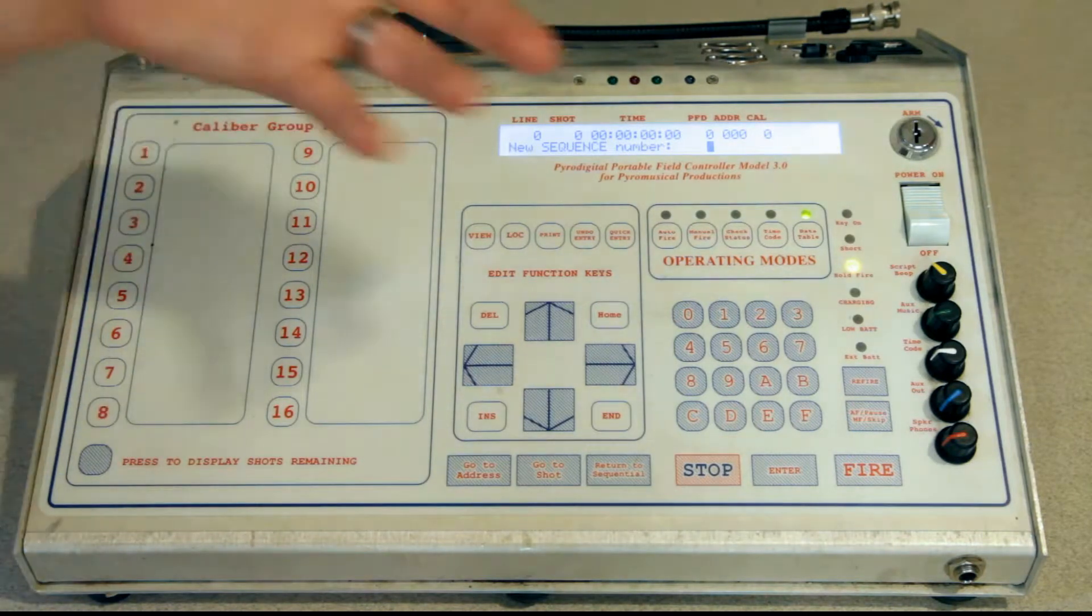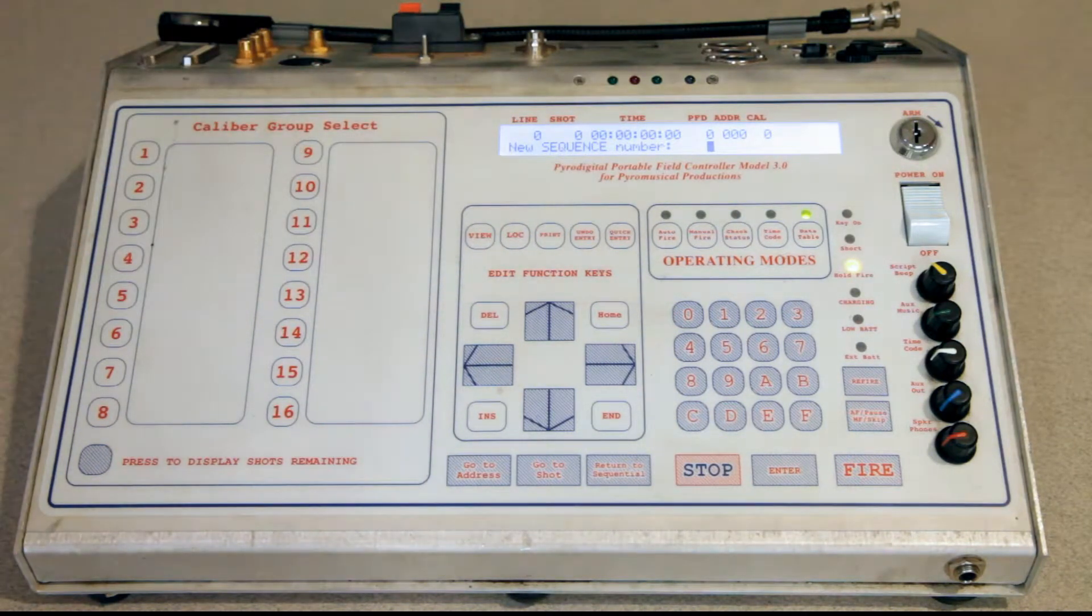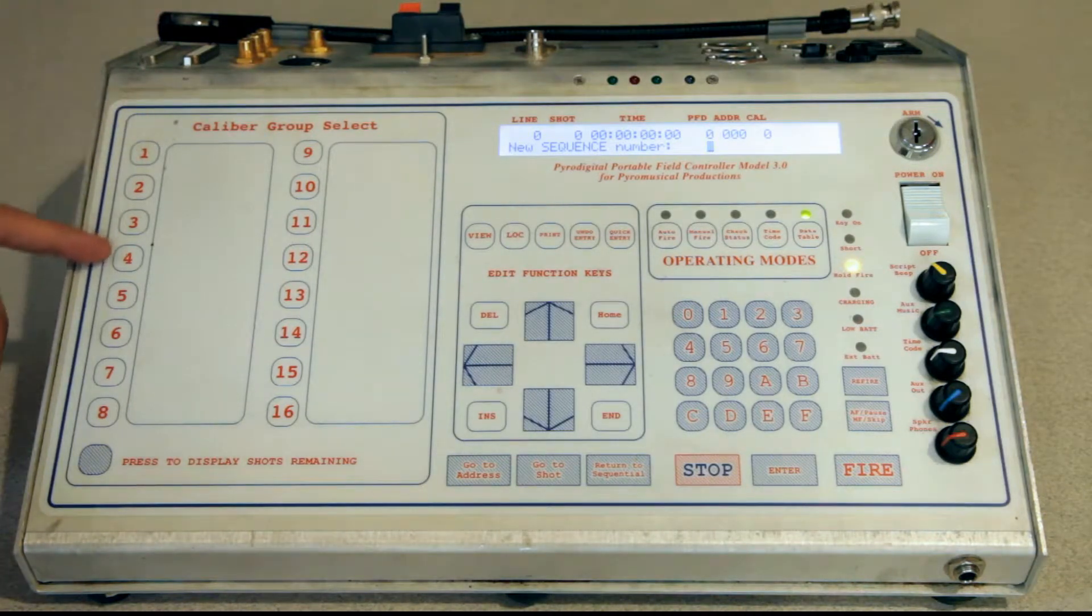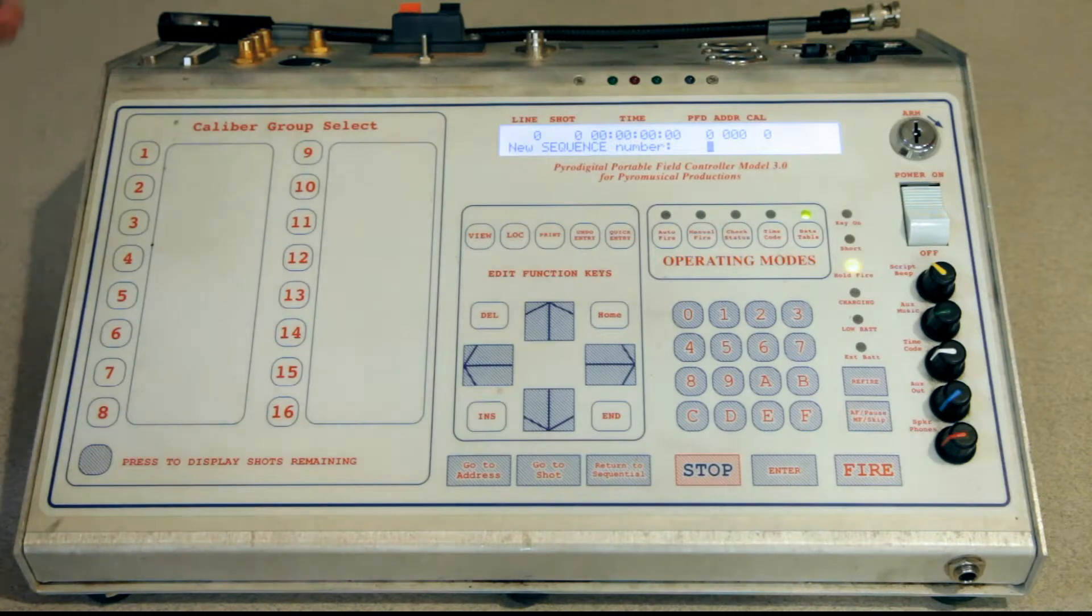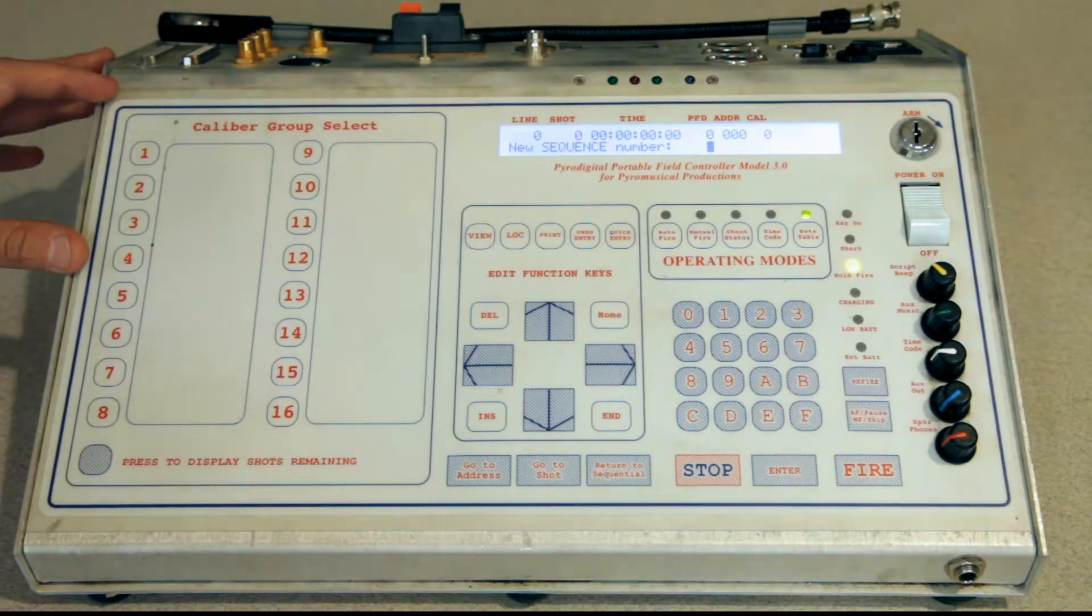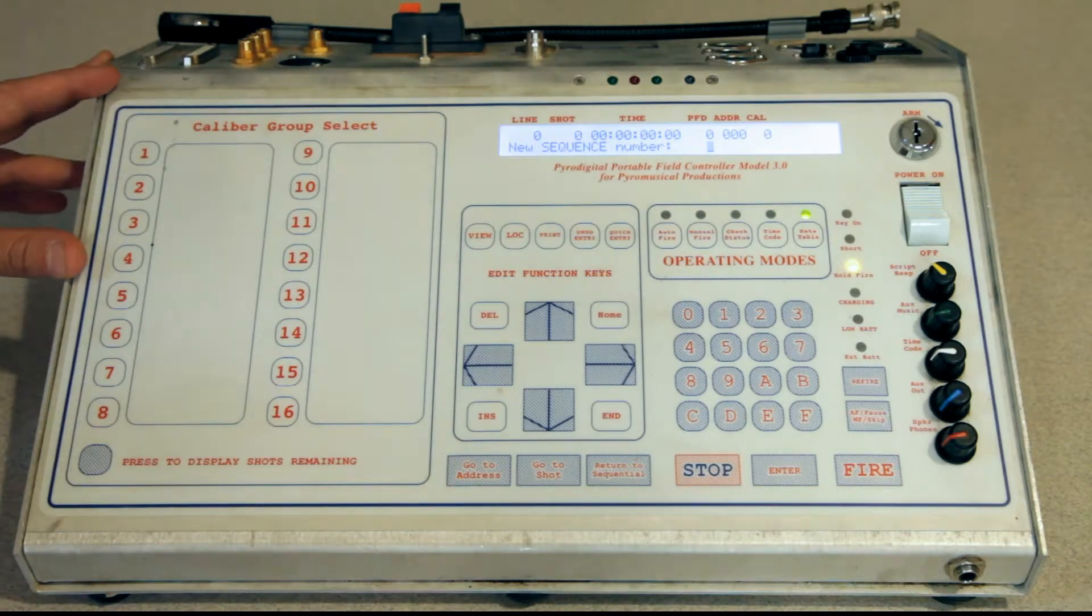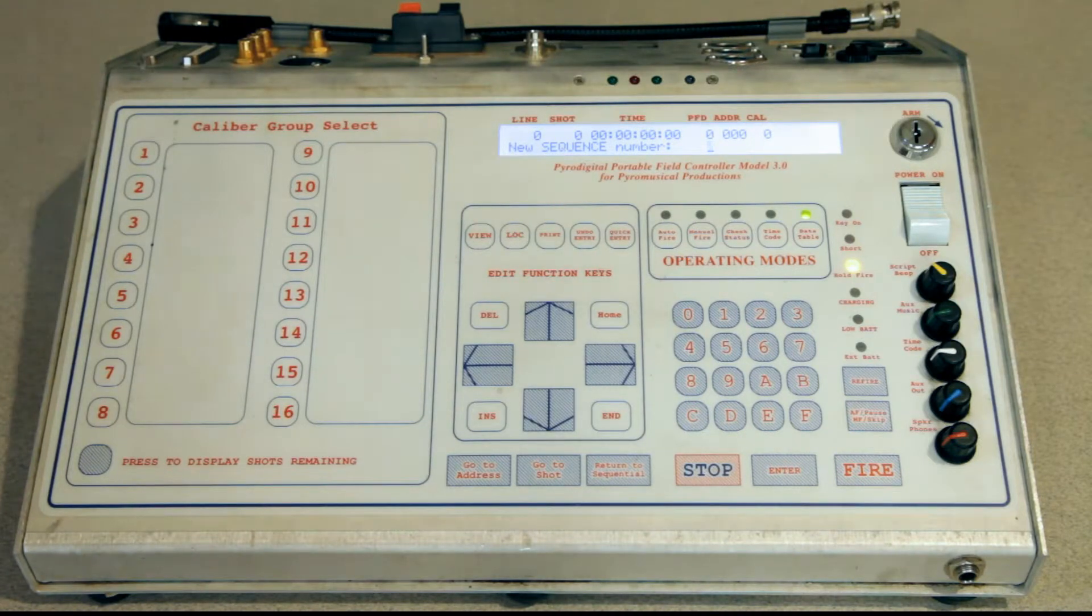So you'd want to be in manual fire mode for that example and using the caliber group select allows you to effectively organize those shots during that manual fire sequence. Organizing them into rockets red glare, bombs bursting in air, anthem finale. You might have some shots during a baseball player introduction.